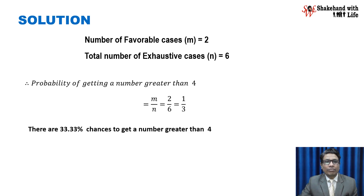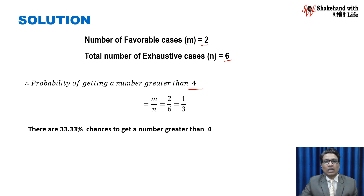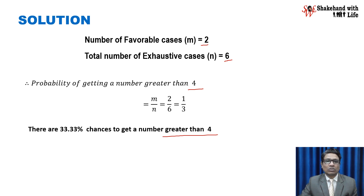Therefore, the probability of getting a number greater than 4 equals M divided by N. M equals 2 and N equals 6, so 2 divided by 6 gives us 1/3. That means we have 33.33% chances — one third — to get a number greater than 4 when we roll a dice.